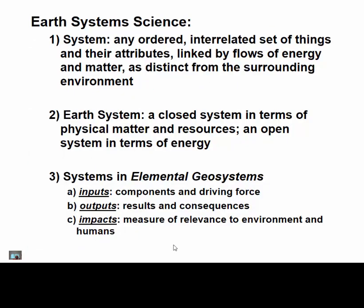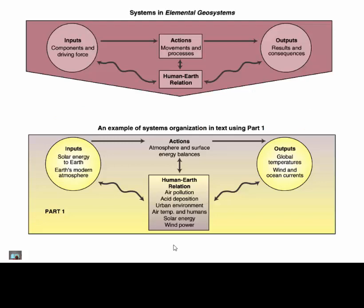In terms of earth systems science, a system is an ordered, interrelated set of things and their attributes. There are flows of energy and matter, with inputs, outputs, and impacts attached to these. You can see the systems analysis or system setup when we talk about physical geography and some of the geosystems here.